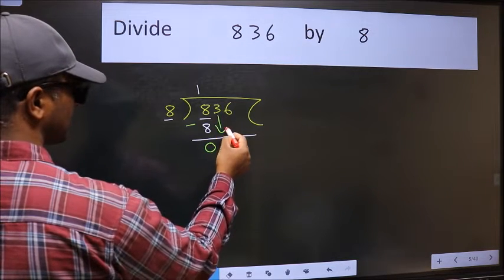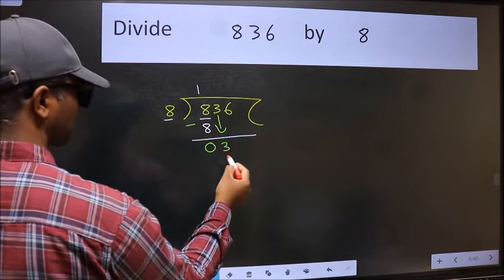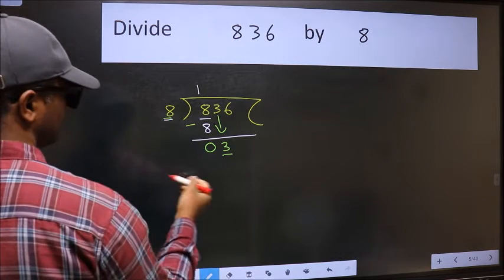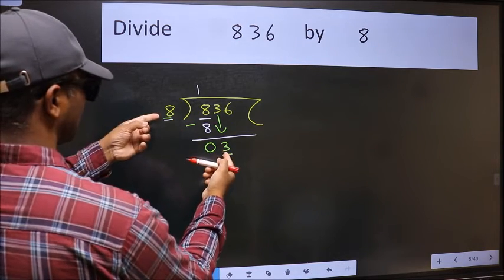After this, bring down the beside number. 3 down. Now here we have 3 and here 8. 3 is smaller than 8.